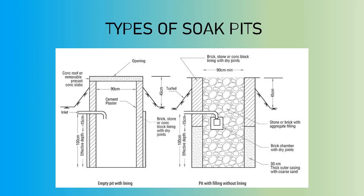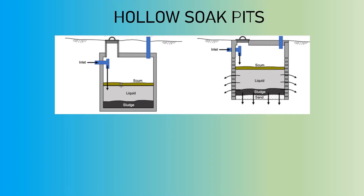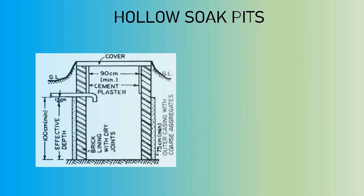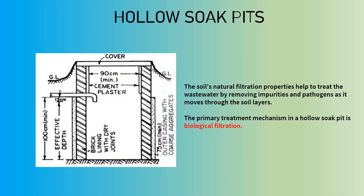The two major types of soak pits are hollow soak pits and filled soak pits. A hollow soak pit is essentially a pit dug into the ground without any internal filling material, such as gravel or stones — it is typically a large, empty cavity in the ground. When wastewater from sources like septic tanks or greywater systems is directed into a hollow soak pit, it percolates directly into the surrounding soil. The soil's natural filtration properties help to treat the wastewater by removing impurities and pathogens as it moves through the soil layers. The primary treatment mechanism in a hollow soak pit is biological filtration.